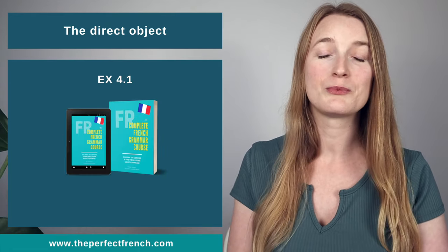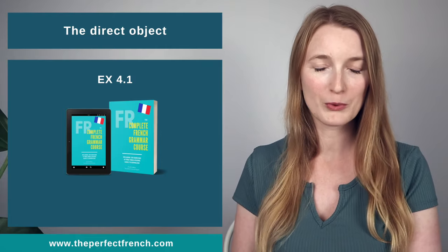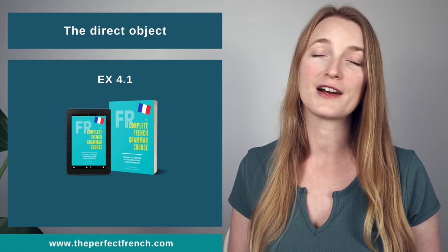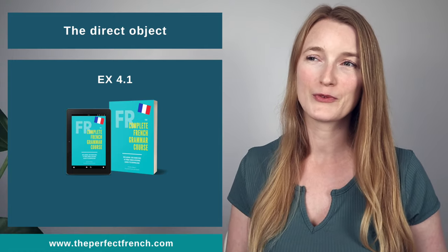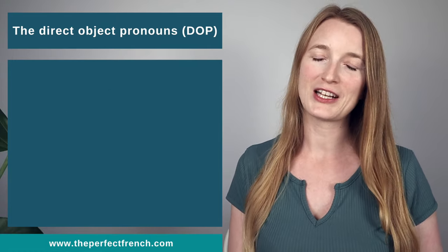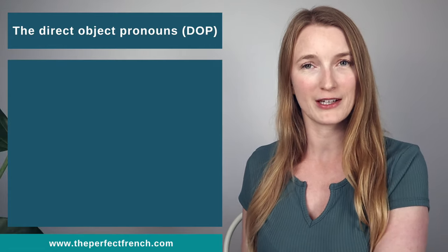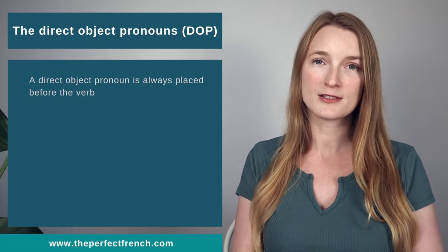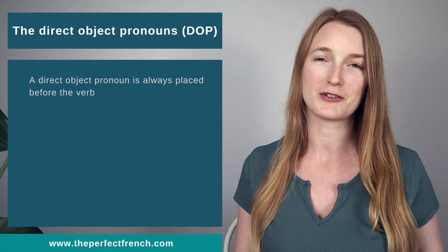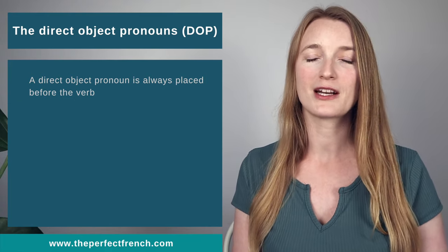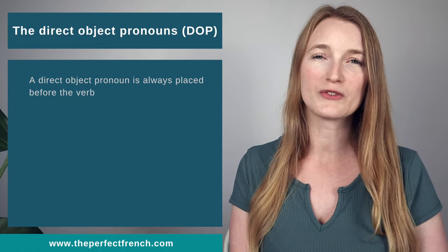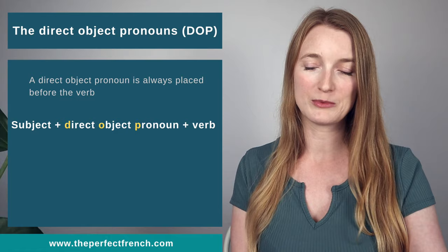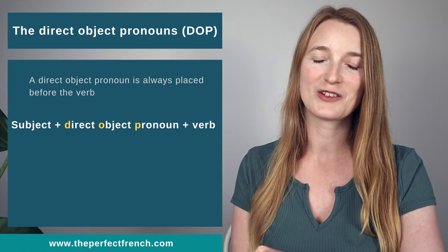You can already practice with exercise 4.1. You have about 10 sentences in French and you have to find and circle the direct object. The next point is to see the direct object pronoun. A direct object pronoun is a pronoun that replaces the direct object. The direct object pronoun is placed before the verb in French — so we have subject, direct object pronoun, and then the verb.